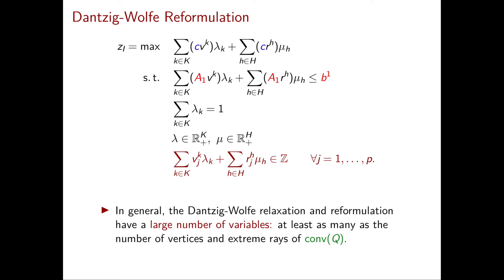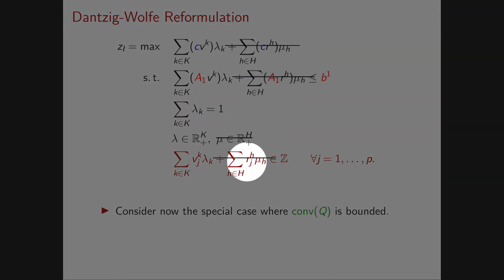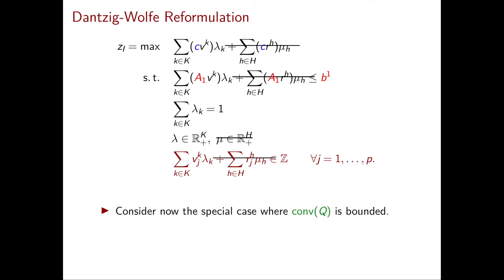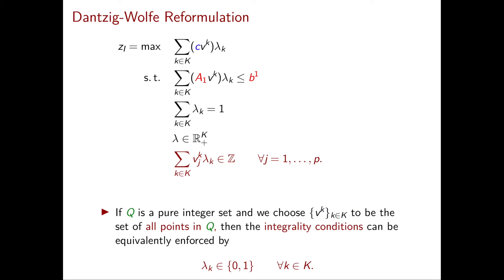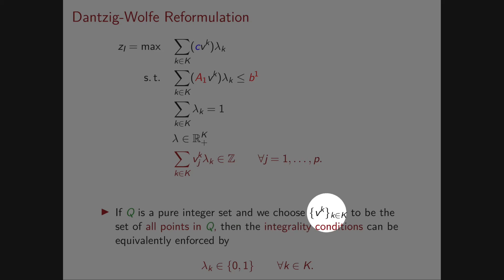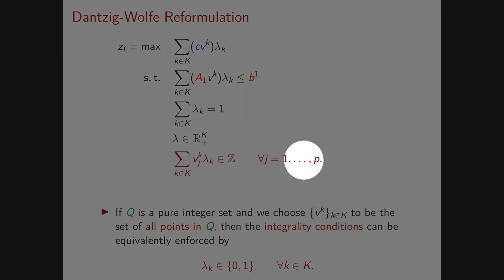Both the relaxation and the reformulation have a huge number of variables — at least one for every vertex and every extreme ray of conv(Q). In the common special case where conv(Q) is bounded, there are no extreme rays, so we can discard all parts involving the rays r_h and multipliers μ, simplifying the formulation. In the even more special case where Q is a pure integer set and V_K is taken to be all points in Q, the integrality conditions can be replaced by binary constraints λ_k ∈ {0,1} for every k in K, since the binary conditions together with the equation Σλ_k = 1 force exactly one λ_k to equal one and all others to be zero.